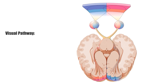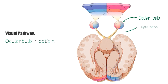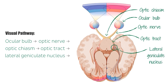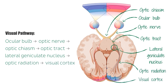The visual pathway begins with light entering the ocular bulb and being processed by the retina. Information is then passed on from the retina by the optic nerve, which travels to the optic chiasm. From the optic chiasm the axons are now called the optic tract. The axons then synapse at the lateral geniculate nucleus.